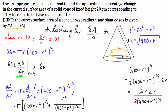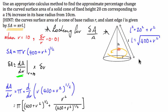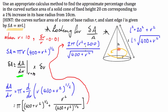That's our derivative, but we need it in a simpler combined form. To get a common denominator, we multiply the first term by (400 plus R squared) to the half over (400 plus R squared) to the half. Combining the fractions, we simplify to arrive at a single expression for dA/dR.